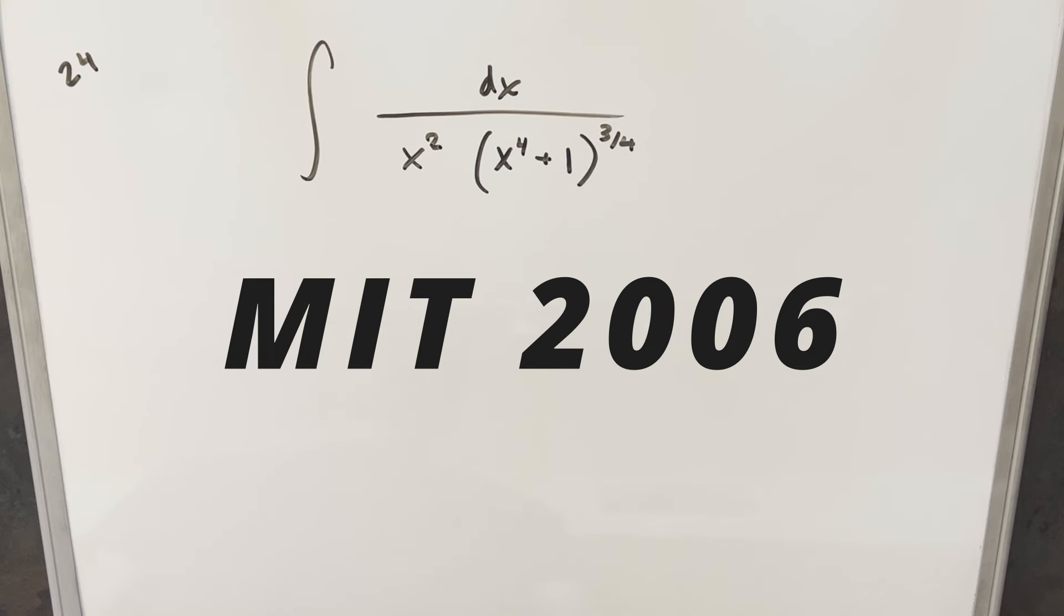We have the integral of 1 over x squared times x to the 4th plus 1 to the 3/4ths dx.